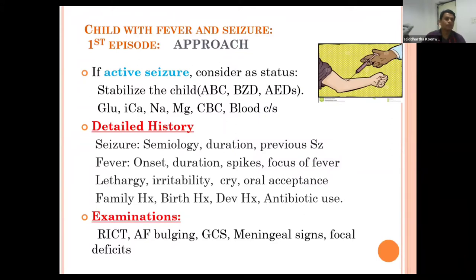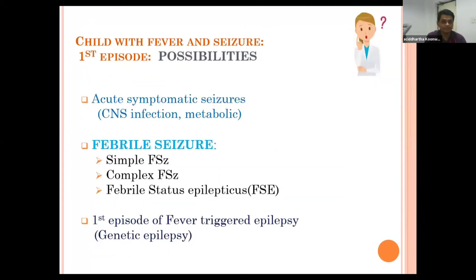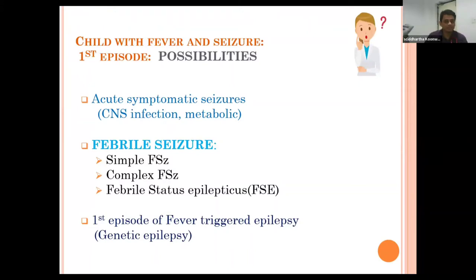On examination, look for signs of neurological insult such as raised ICP, bulging anterior fontanel, meningeal signs, and focal neurological deficit. When a child presents with fever and seizure for the first episode, there are three possibilities: acute symptomatic seizure due to CNS infection or metabolic cause, febrile seizure, or the first episode of fever-triggered epilepsy.